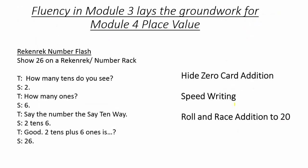Fluency in Module 3 is so important. It's three weeks and we don't want to walk away from all the work laid in with addition and subtraction. Continuing to count in the say-ten way, using hide-zero cards to add by place value, speed writing, and roll-and-race addition to 20 will keep those fluencies tight. This comes with sprints — fluency, fluency, fluency. What you're doing is using concrete measurement to reinforce all those skills you've more abstractly learned about addition and subtraction. Good luck in the module, and feel free to share this with parents.